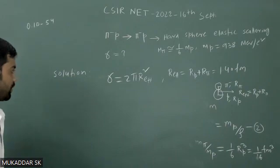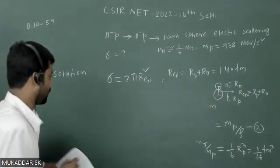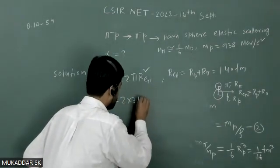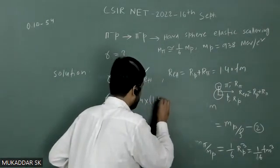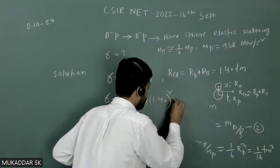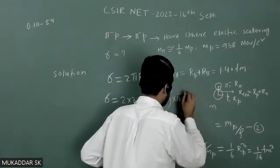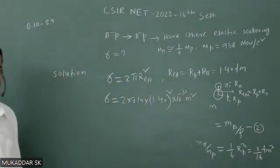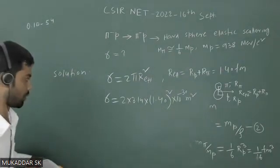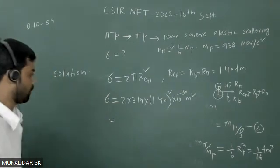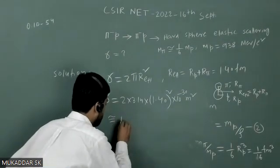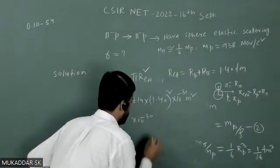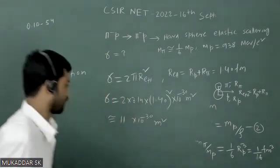So now if I substitute these values here, then we'll get σ equals to 2 times 3.14 times 1.40² times 10^(-30) meter square, because 1 femtometer is nothing but 10^(-15) meter. And this will become approximately 11 times 10^(-30) meter square.